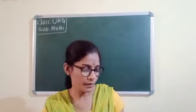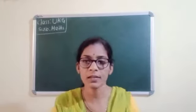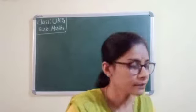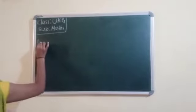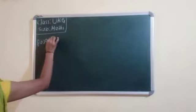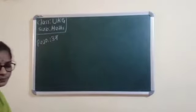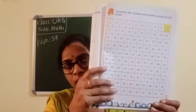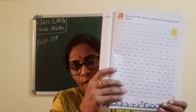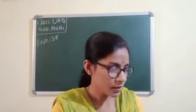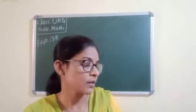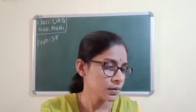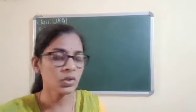Open your test book, page number 137. What they will give here? Look here — page number 137. They will give here 1 to 100 numbers. What to do? Count by 10 skip — color every 10th number on the chart.